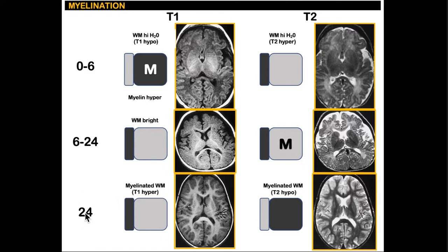At 24 months, myelination is now adult-like or near-adult-like, comprising T1 bright and T2 dark white matter tracts. Notice also that the subcortical U fibers are also myelinated at this stage, unlike in the earlier stages.